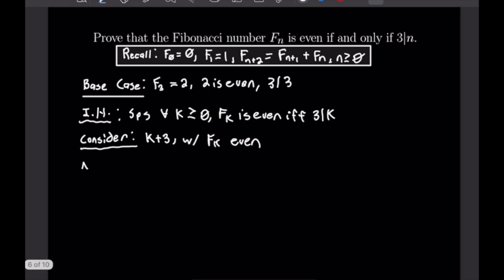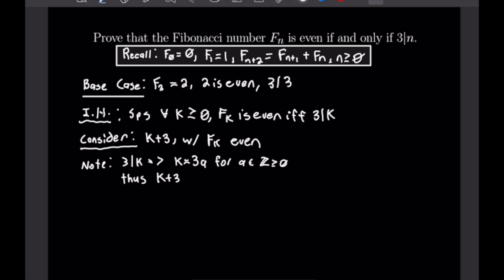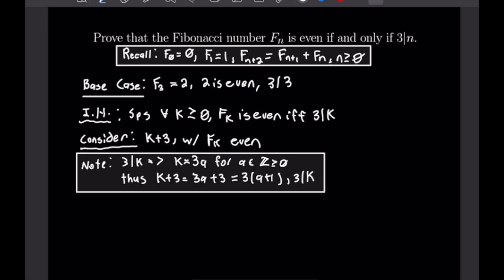To start, I want to note the following. If 3 divides K, we can write K = 3A for some non-negative integer A. That means K+3 = 3A + 3 = 3(A+1). So we've completed a simple proof that 3 will divide K+3.